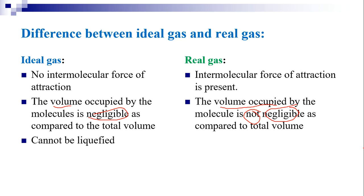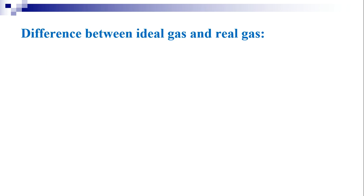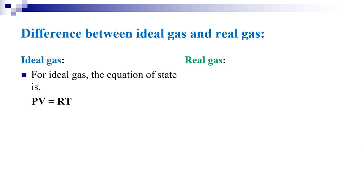An ideal gas cannot be liquefied, whereas a real gas can be liquefied under some conditions. For an ideal gas, the equation of state is given by PV = RT, where P is the pressure of the gas, V is the volume, R is the gas constant, and T is the absolute temperature.